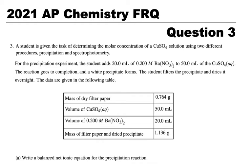The 2021 AP Chemistry FRQ Question Number 3. This is a 10-point question.